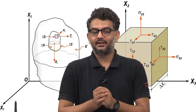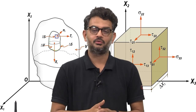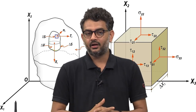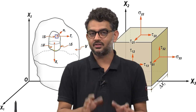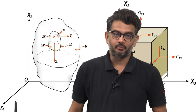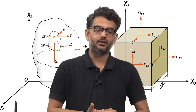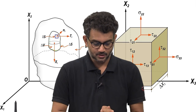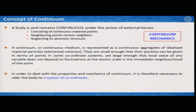Let us understand what a continuum is, or what we consider continuous in structural geology or in the context of general behavior of materials. A body is and remains continuous under the action of external forces — we will learn what force is very soon. It must satisfy certain criteria: it consists of continuous material points, meaning the material should not have any voids at your scale of observation. It must be continuous, possibly of different materials, but very much continuous. And before and after deformation, the neighboring points remain neighbors — that is one of the primary considerations of a continuous deformation.